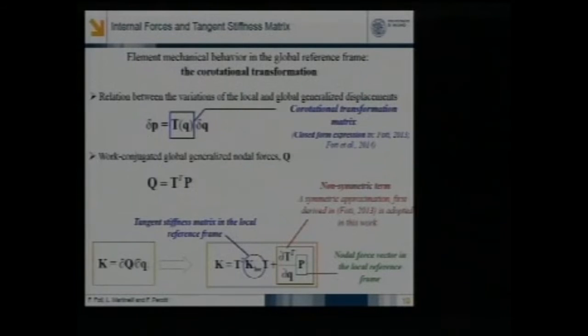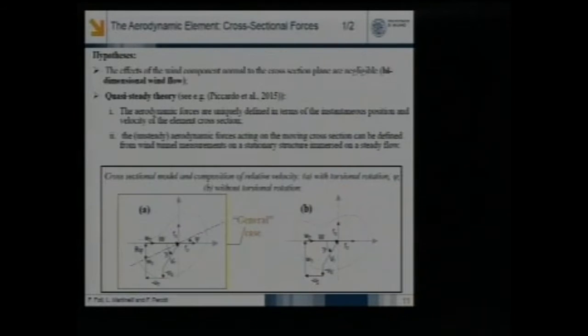Once we have the response in the local reference system, we can go back into the global one by exploiting the corrotational transformation, which is governed by this corrotational transformation matrix, which can be derived in closed form. It has been done by the research group in previous works.